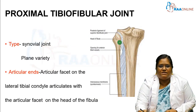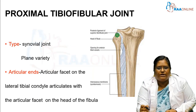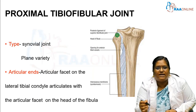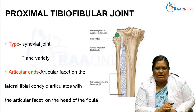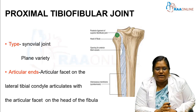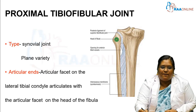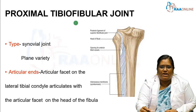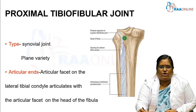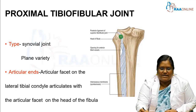First, we look at the proximal tibiofibular joint. Any joint — you should know the type of the joint. This joint is a synovial joint, and it is of the plain variety. So the proximal tibiofibular joint is a synovial joint of the plain variety.